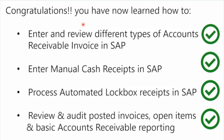Congratulations on completing the accounts receivable bootcamp. You have now learned how to enter different types of accounts receivable invoicing in SAP — manual invoices or automated invoices from sales billing documents. You've learned how to enter manual cash receipts and match them to open items, how to process an automated lockbox receipt in SAP from an electronic bank file, and how to review and audit posted invoices, open items, and basic AR reporting including balances, line items, and the age analysis report.